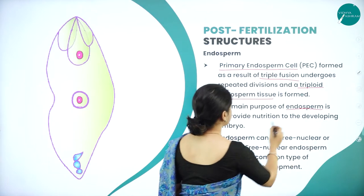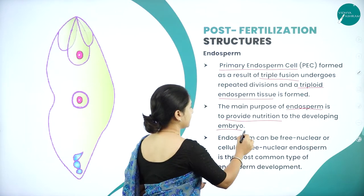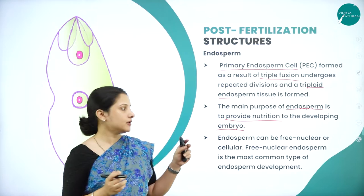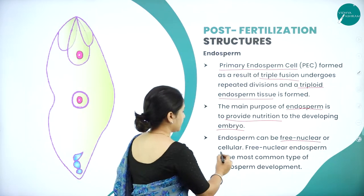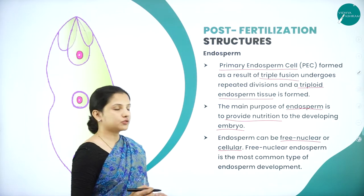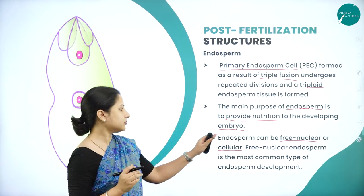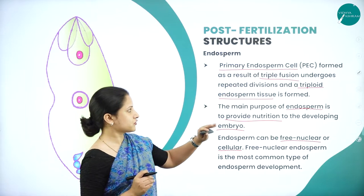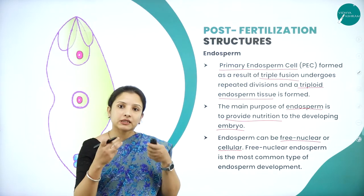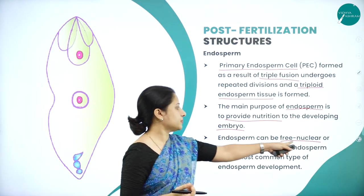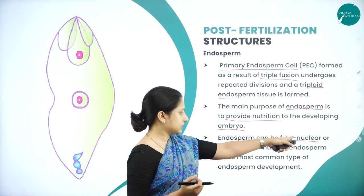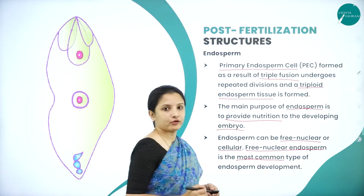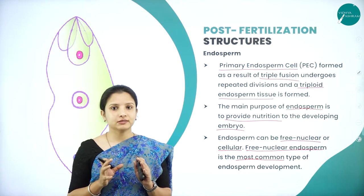The main purpose of the endosperm is to provide nutrition to the developing embryo. Once formed, the endosperm can be of two types: free nuclear or cellular. Free nuclear endosperm is the most common type formed inside the ovule, compared to cellular endosperm.